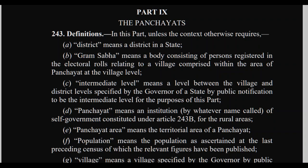To summarize: Part 9 of the Indian constitution envisages a three-tier system of panchayats — village level, intermediate panchayat, and district panchayat. The intermediate panchayat stands between village level and district panchayat. And if a panchayat is dissolved, elections must take place within 6 months.